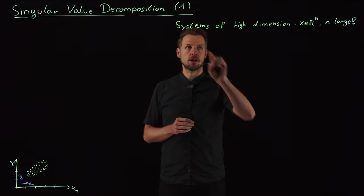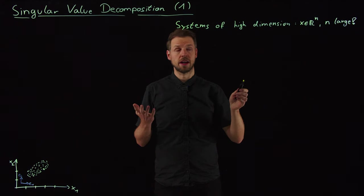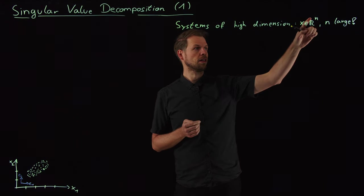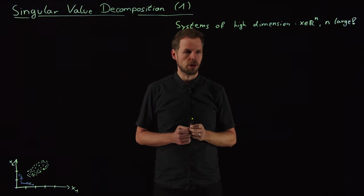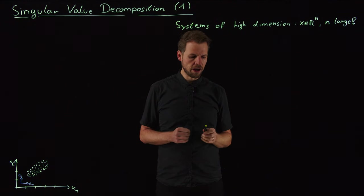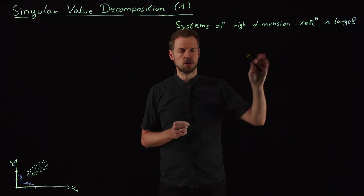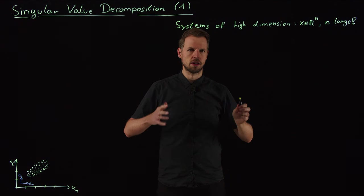So what this is about is the question that we have a system of high dimension, or potentially very high dimension, where state x is in R^n and n is large. And this can be a hundred, this can be even a million or a billion, depending on which kind of system we want to study. We have seen for partial differential equations we can easily get to the hundreds of thousands or even millions if we have a fine discretization.